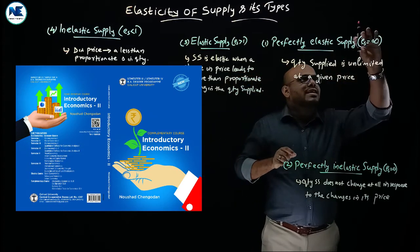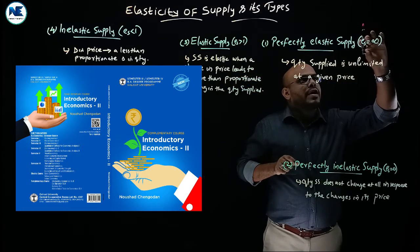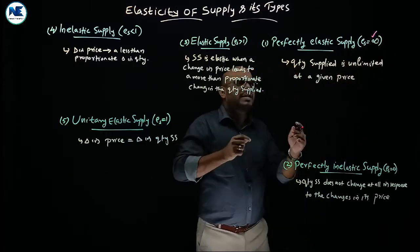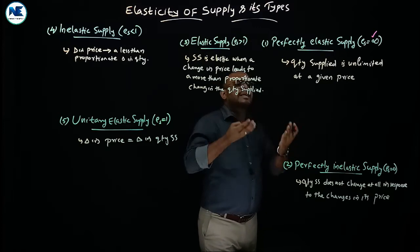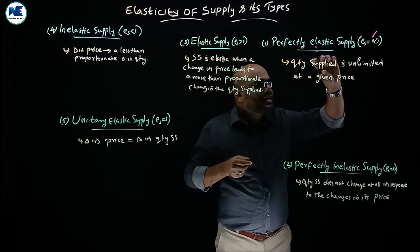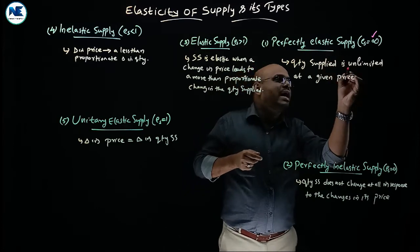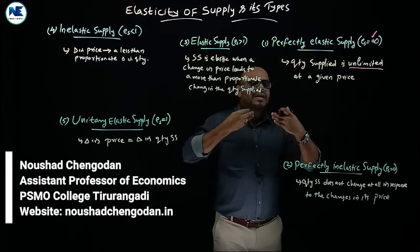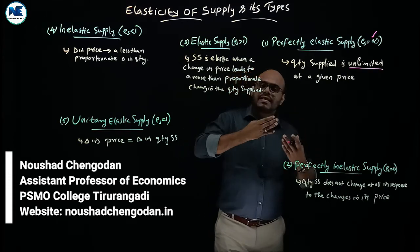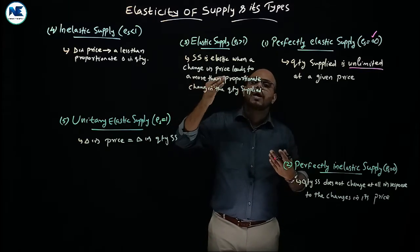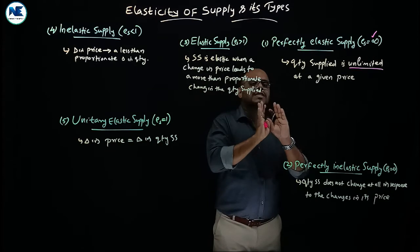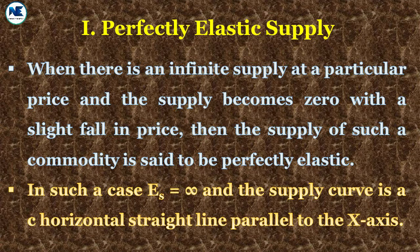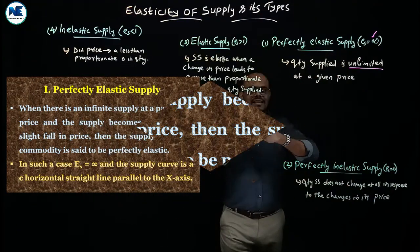The first type is perfectly elastic supply. The coefficient of elasticity of supply is infinity — this is the most important point. Here, the quantity supplied is unlimited at a given price. At one particular price level, an infinite amount can be supplied.